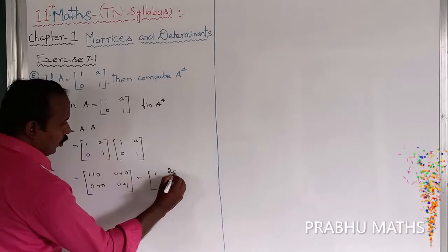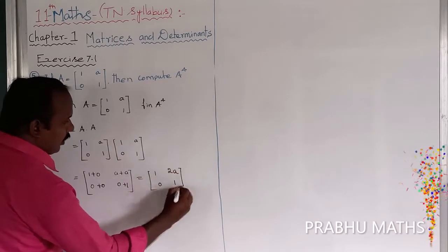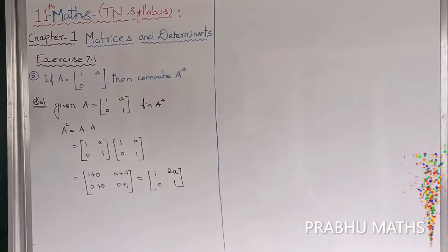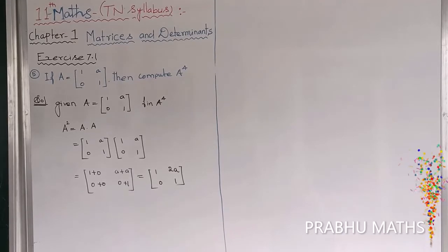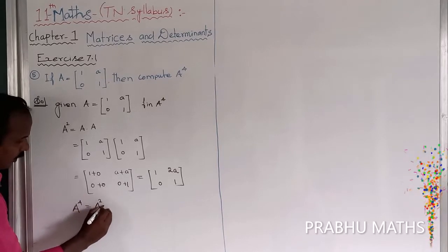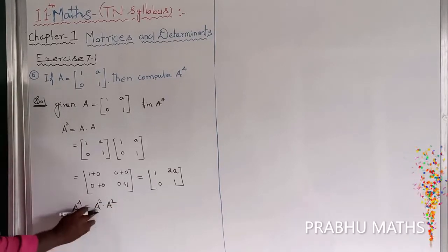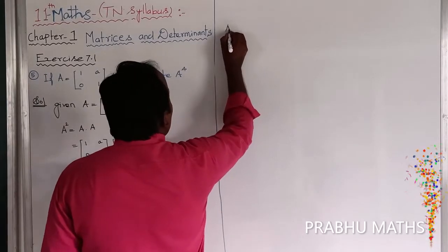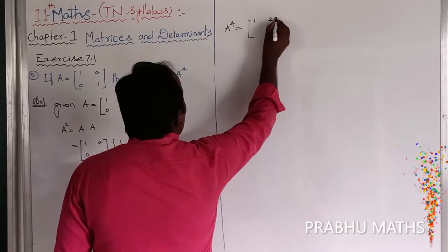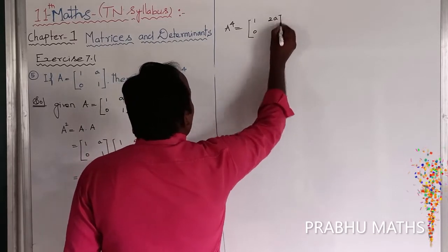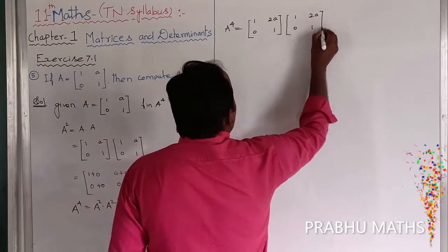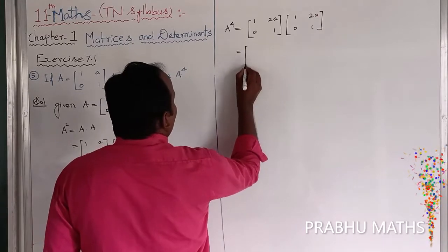So A square is equal to [[1, 2a], [0, 1]]. Next, A power 4 is equal to A square into A square. So A power 4 equals [[1, 2a], [0, 1]] into [[1, 2a], [0, 1]].